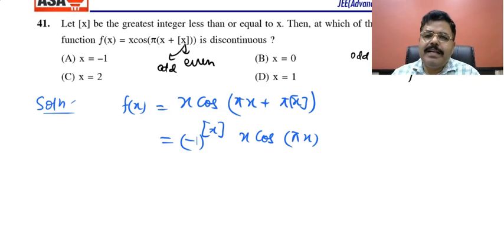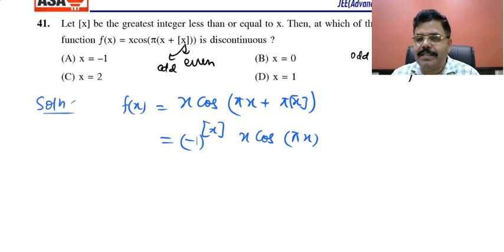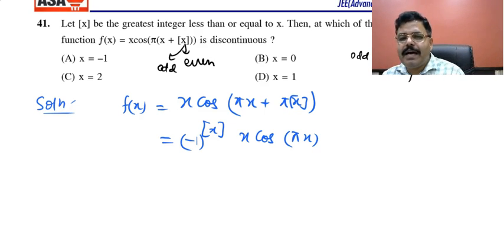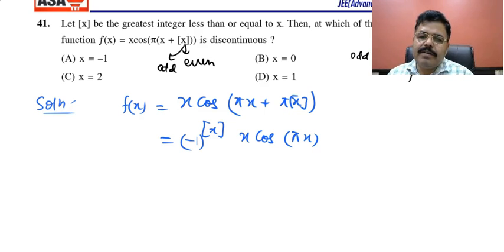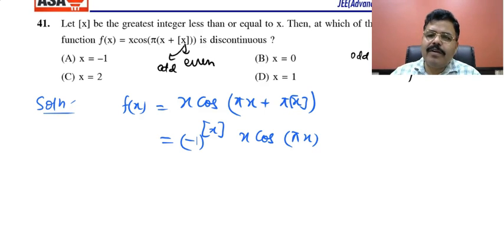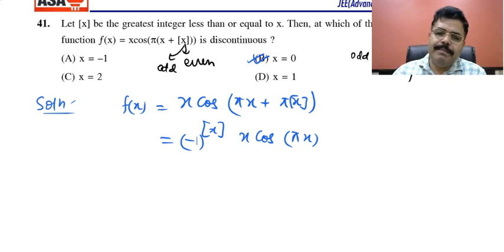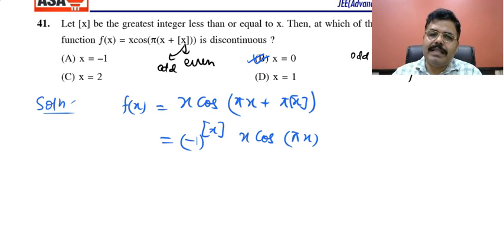The doubtful case is at zero. We check: whether at zero, from zero − h or zero + h, the function value is always positive. Because (−1)^0 = 1 for both sides of zero, the function will have the same sign. Therefore it will be continuous at zero and discontinuous at all other integral points.